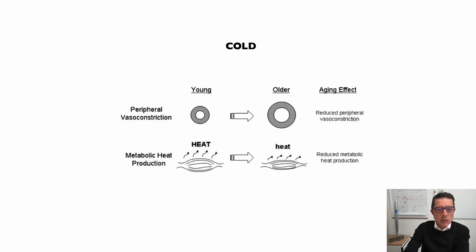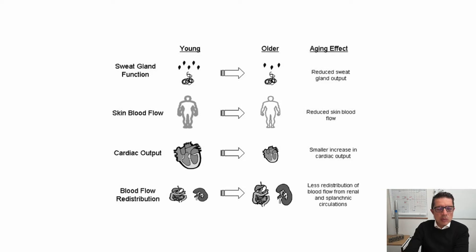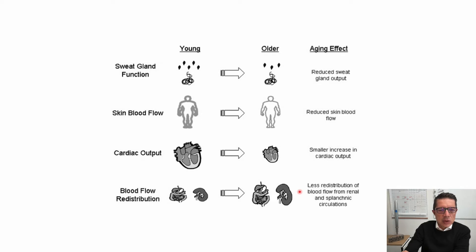We also spoke about the impact in cold. In cold exposure, older adults have less ability to vasoconstrict and prevent hypothermia, and their ability to increase metabolic heat production is smaller. So they're potentially exposed to greater problems with low temperatures and also with increased environmental temperatures, due to reduced sweat output, reduced skin blood flow compared to younger adults, smaller increase in cardiac output when exposed to heat, and less redistribution of blood from the renal and splanchnic bed towards the skin, which is the primary organ contributing to temperature regulation.